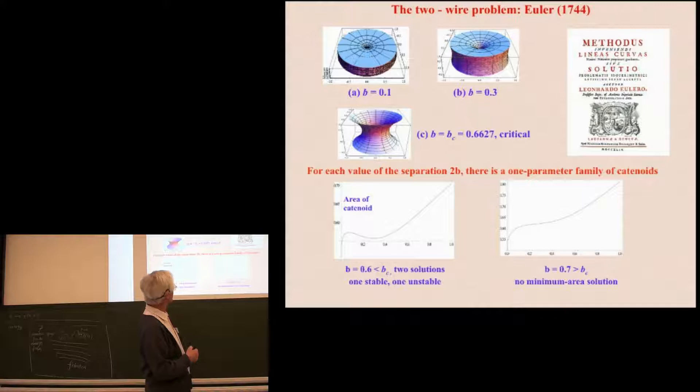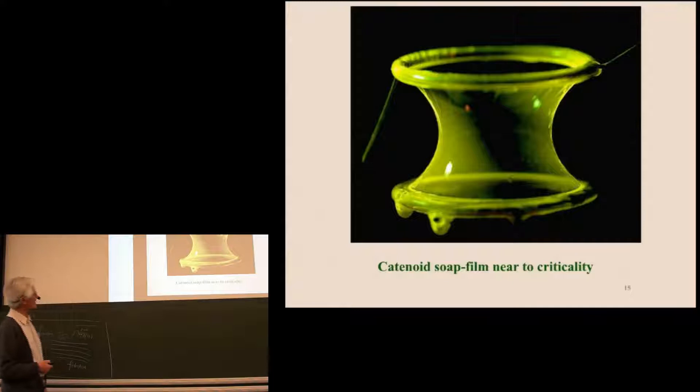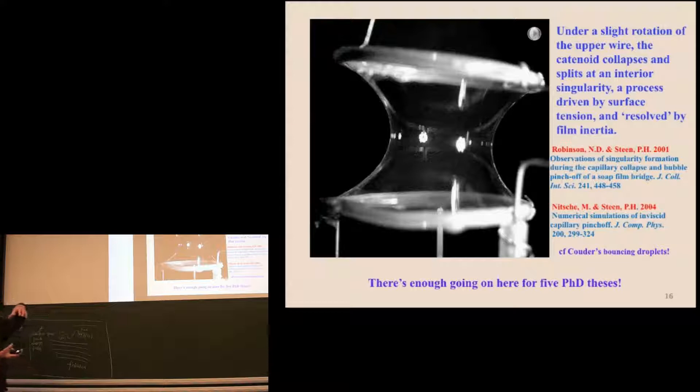Now as you increase B, the maximum and the minimum move into coincidence at an inflection point. And eventually beyond this critical value, here it's B equals 0.7, there's no minimum, no maximum. So if you start anywhere on this curve, you run downhill. And that is actually corresponds to collapse of the catenoid to a singularity on the axis. There is an actual photograph of our catenoid soap film near to criticality. If we pull the wires a little further apart, that will collapse.